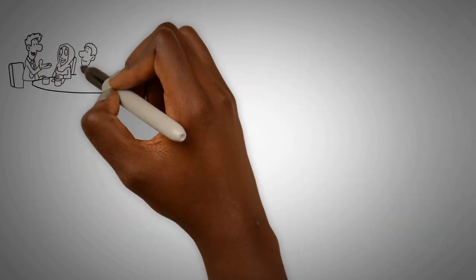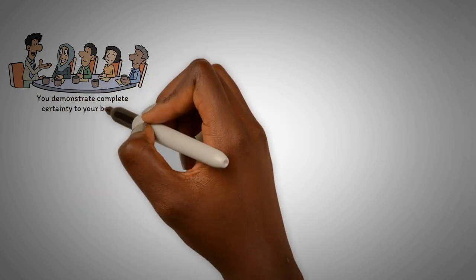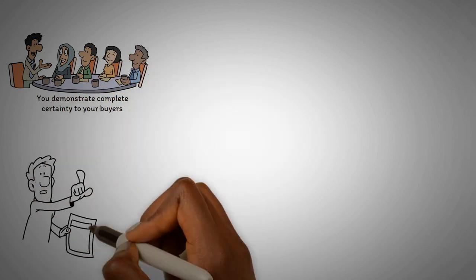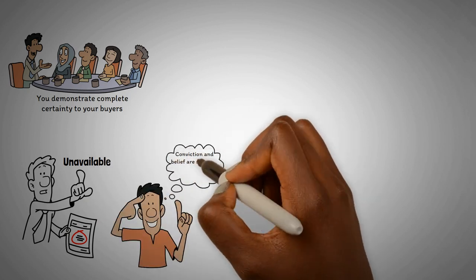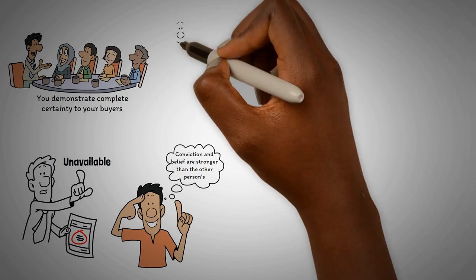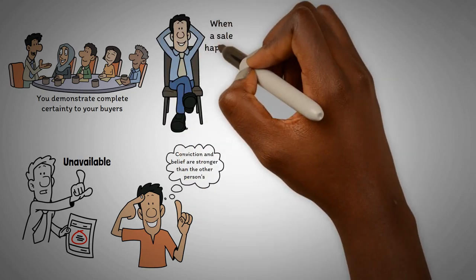Conviction is about staying so firm in your beliefs that you demonstrate complete certainty to your buyers, making other choices seem unavailable. You can make a sale when your conviction and belief are stronger than the other person's, leading them to give up some of their conviction. That's when a sale happens.